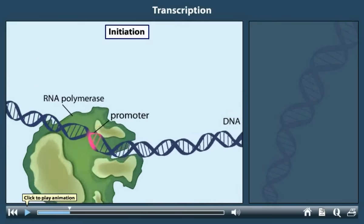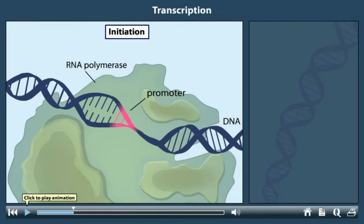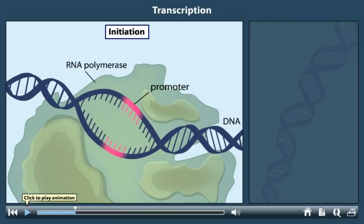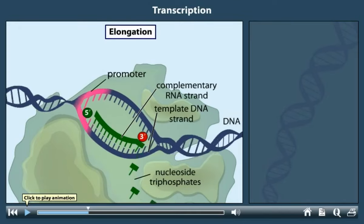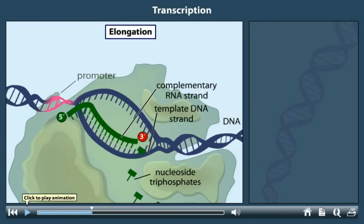RNA polymerase attaches to the promoter and begins to unwind the DNA. At the initiation site, the polymerase begins reading the DNA template strand and building a complementary RNA strand from free nucleoside triphosphates.